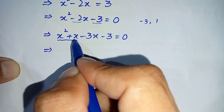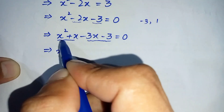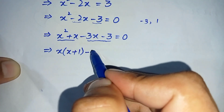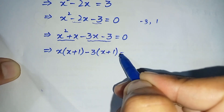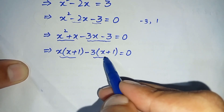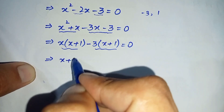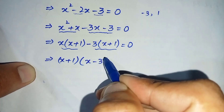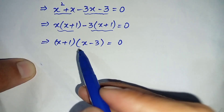Next, take x common from the first two terms and minus 3 common from the last two terms. It will become x times (x plus 1) minus 3 times (x plus 1) is equal to 0. Now take (x plus 1) common from both terms.